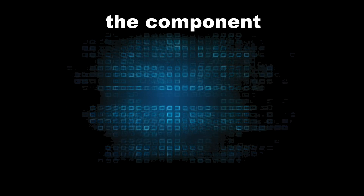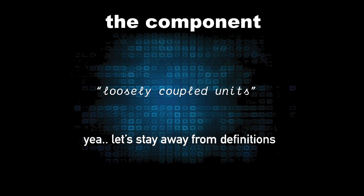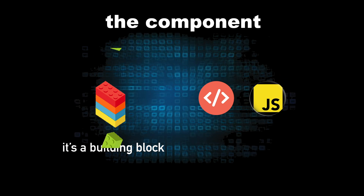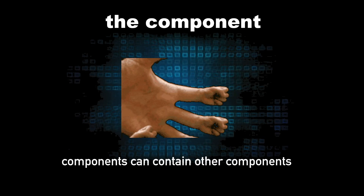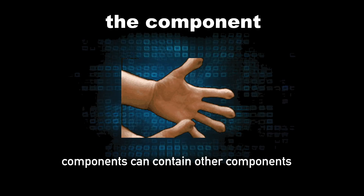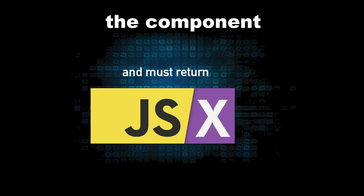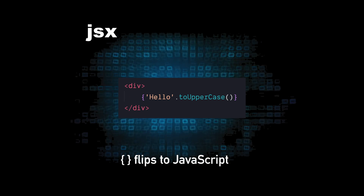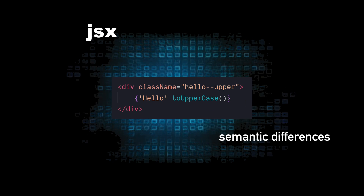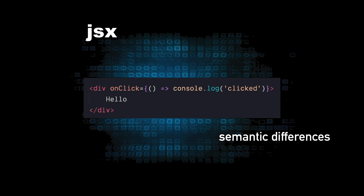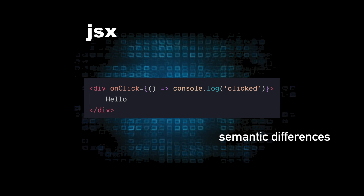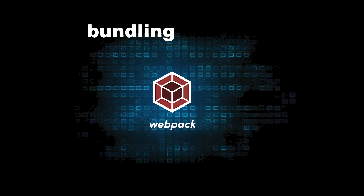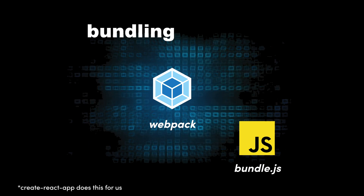Let's talk about the component, the atomic unit of React. The official definition is a loosely coupled unit, but I think a better definition is a building block which contains both markup and JavaScript logic. Components can also contain other components and will always roll up to the App component. They must return JSX, which has an HTML-like syntax that can flip to writing JavaScript when you put brackets in. Keep in mind, it's not HTML — class gets converted to className, and you can enter an onclick listener with a property onclick. Since JSX is real JavaScript, that's why we need the library Webpack, which converts our React components into a single file called Bundle.js that the browser can actually run.